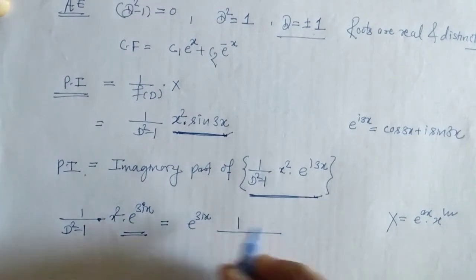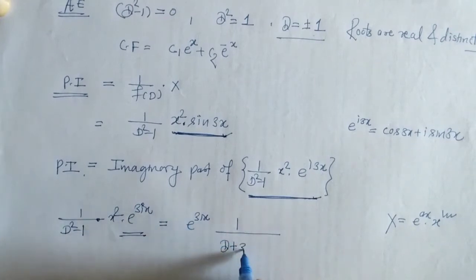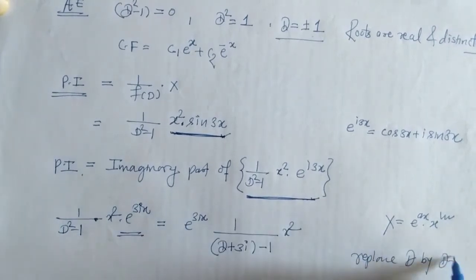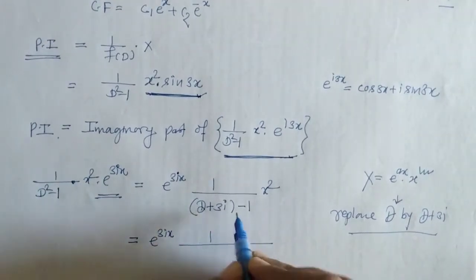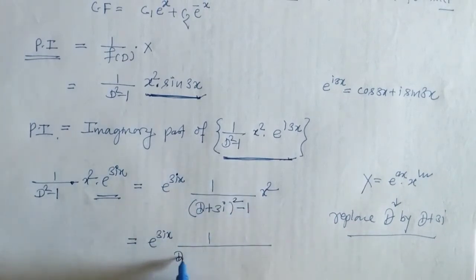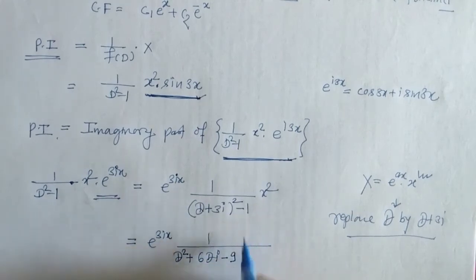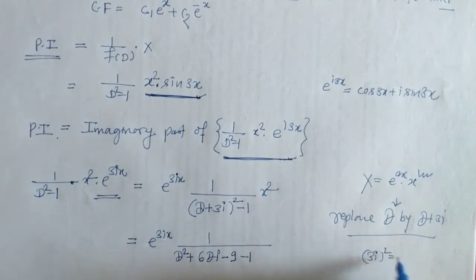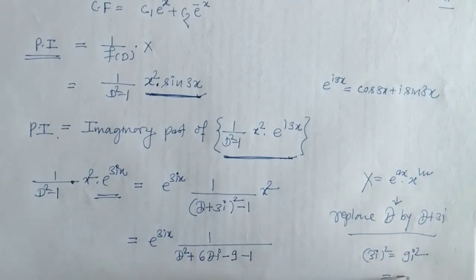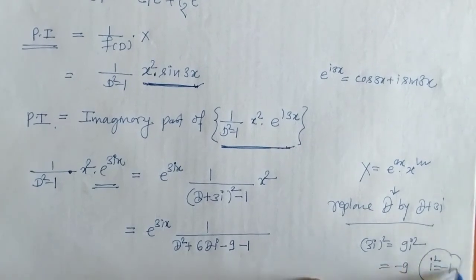We replace d by d + 3i. Now we have to simplify: expanding (d + 3i)² gives d² + 6di + 9i². Since i² = −1, we have 9i² = −9. So f(d + 3i) becomes d² + 6di − 9 − 1, which simplifies accordingly.